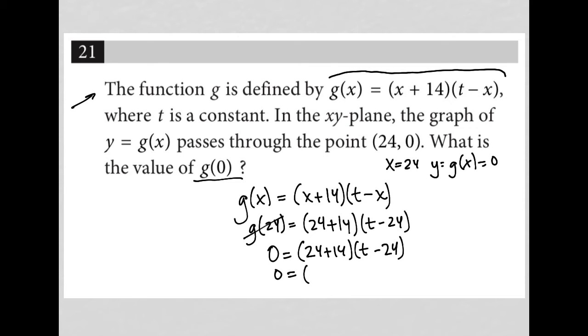So I have 0 = 24 + 14 is 38, and then of course I still have t - 24. I really don't care about this 38 because it's not going to have any bearing on my answer since it's all going to equal 0. So I still have 0 = t - 24, and I can add 24 to both sides to get t = 24. So now I know t = 24.